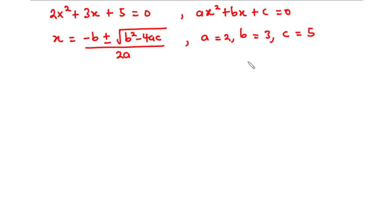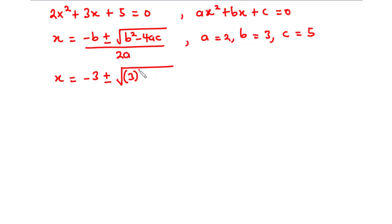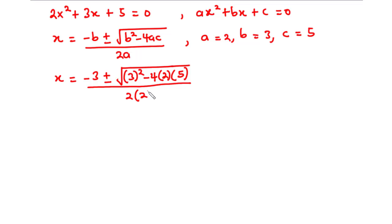Now let's substitute the values of a, b, and c. This becomes x equals negative b — we have b to be 3 — plus or minus the square root of b squared, which is 3 squared, minus 4 times a, which is 2, times c, which is 5, all divided by 2a, so 2 times 2.